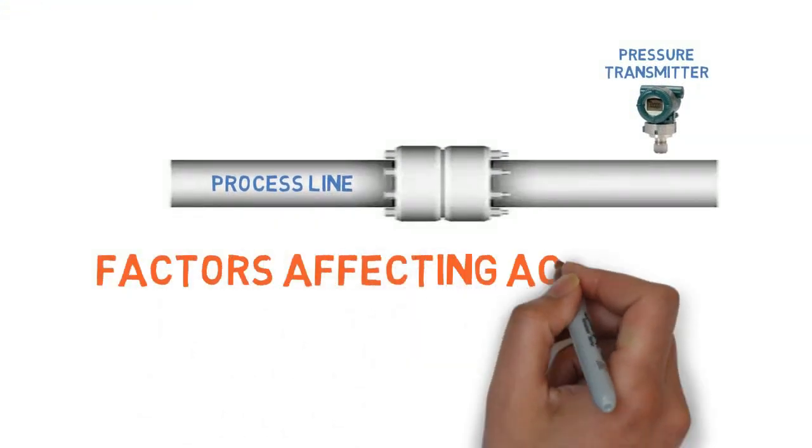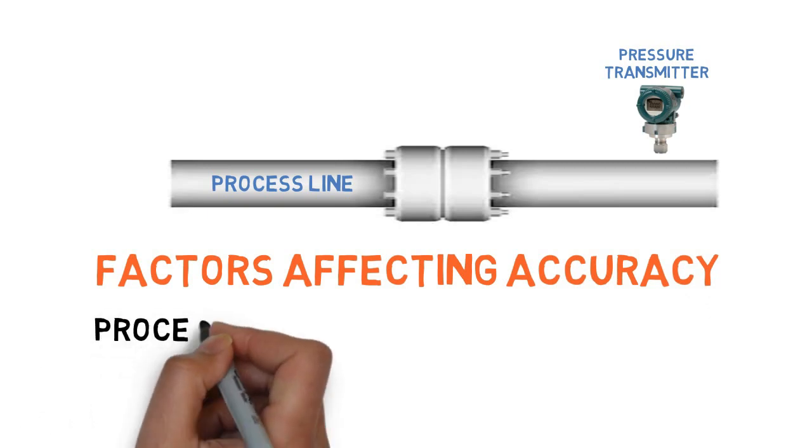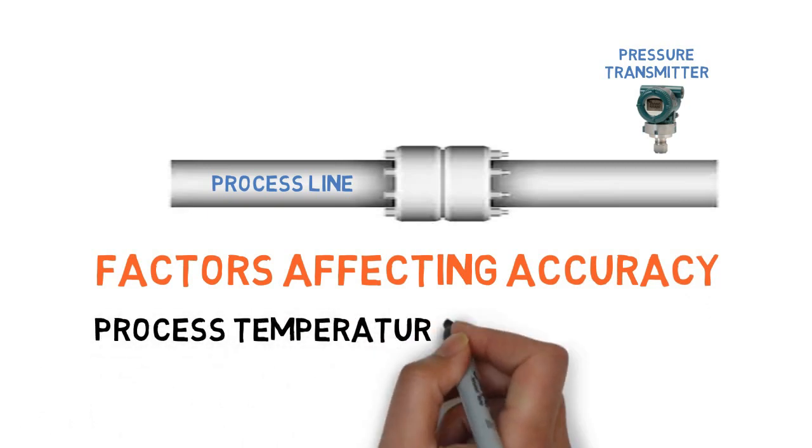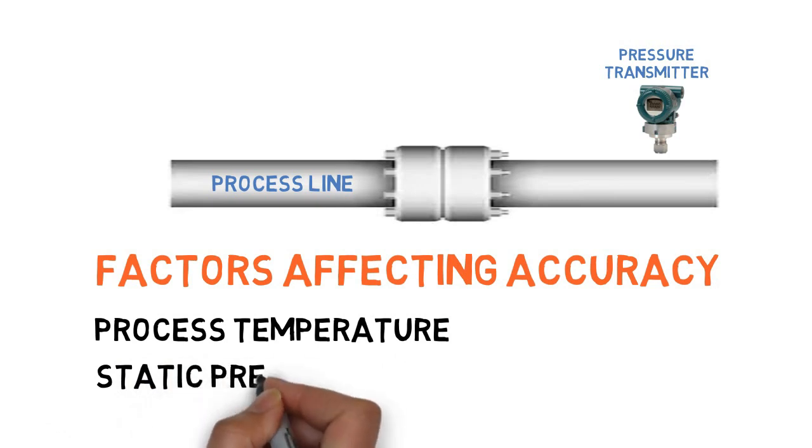Factors affecting transmitter accuracy: Process parameters such as temperature and static pressure can contribute to transmitter errors.